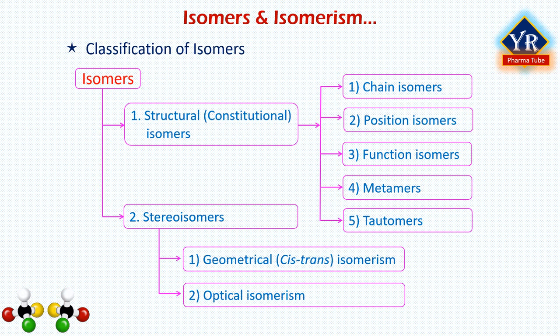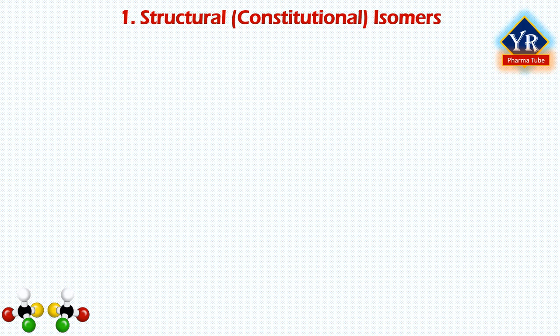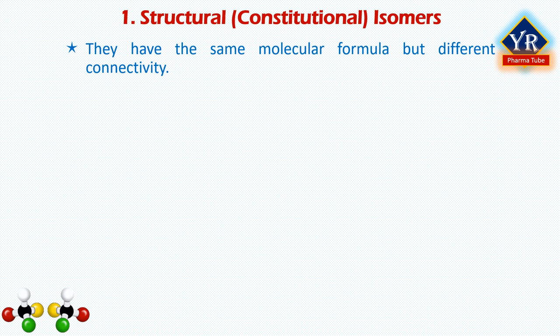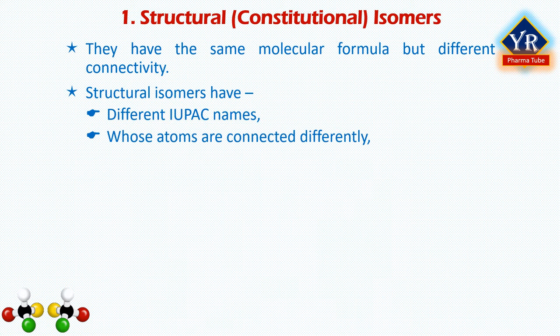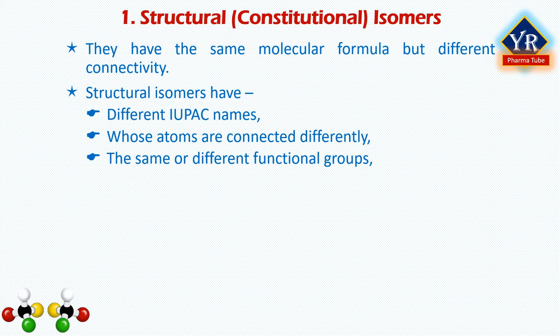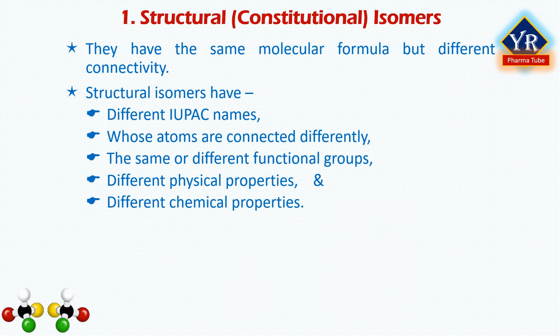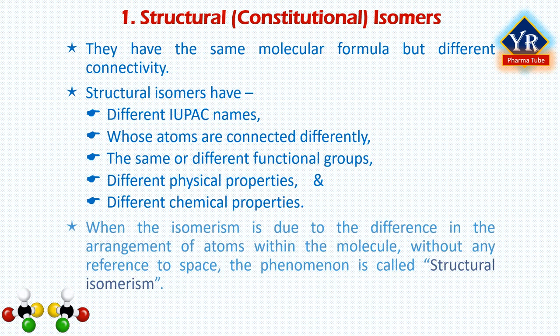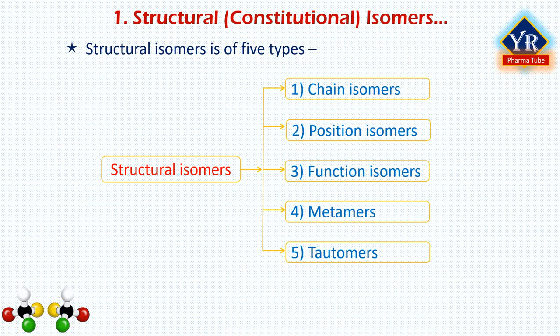Structural isomers, also known as constitutional isomers, have the same molecular formula but different connectivity, meaning their atoms are connected in a different order. They have different IUPAC names, the same or different functional groups, different physical properties so they are separable by physical techniques such as distillation, and different chemical properties so they behave differently or give different products in chemical reactions. When the isomerism is due to difference in the arrangement of atoms within the molecule without any reference to space, the phenomenon is called structural isomerism. These structural isomers are of five types: chain isomers, position isomers, functional isomers, metamers and tautomers.